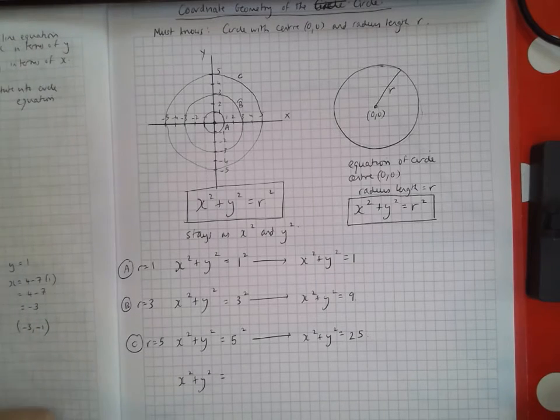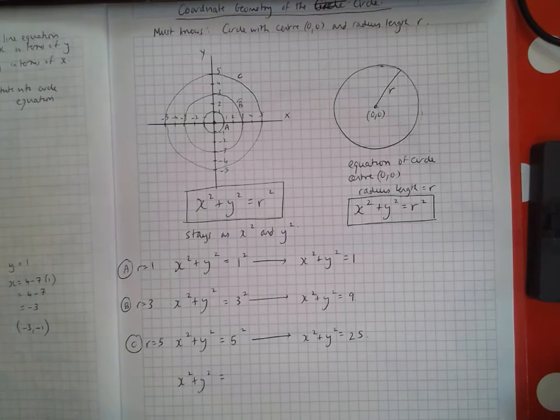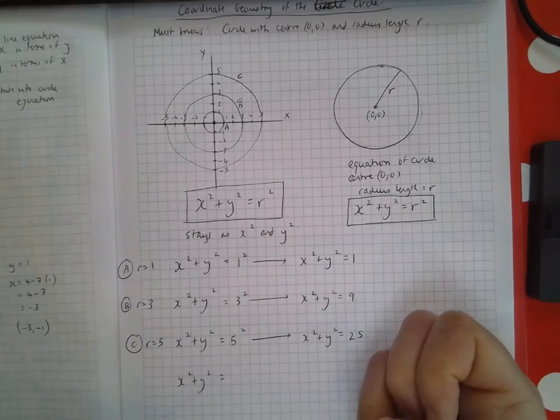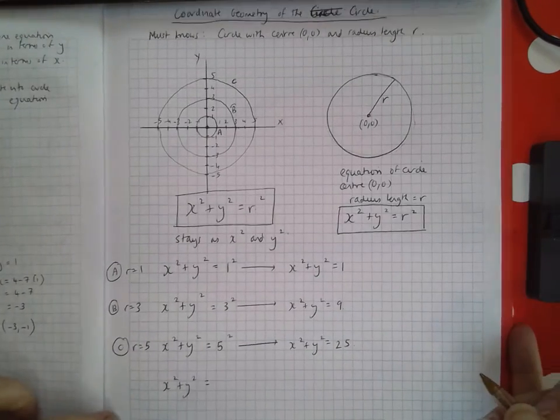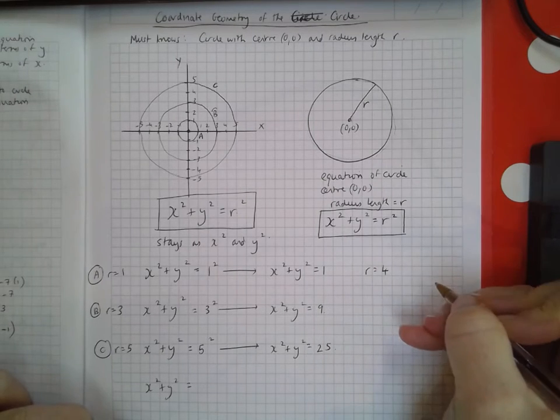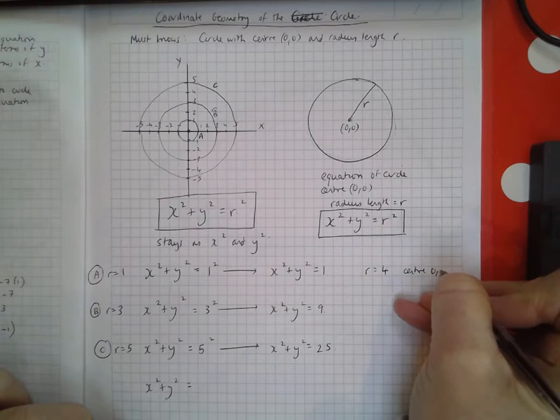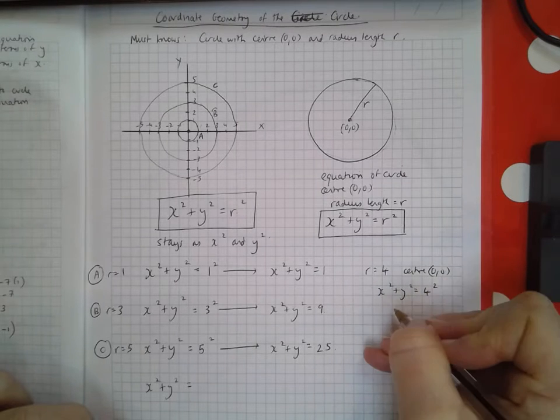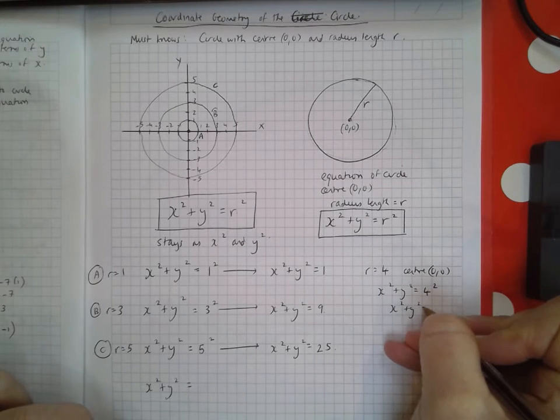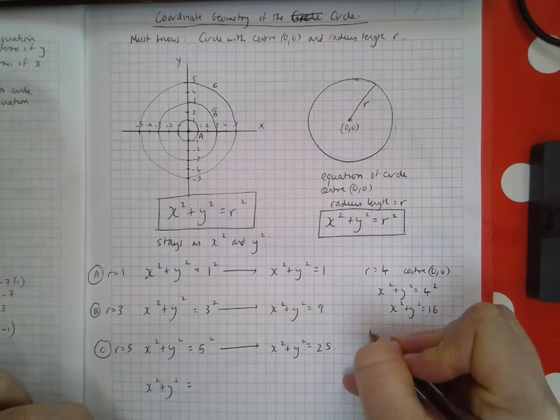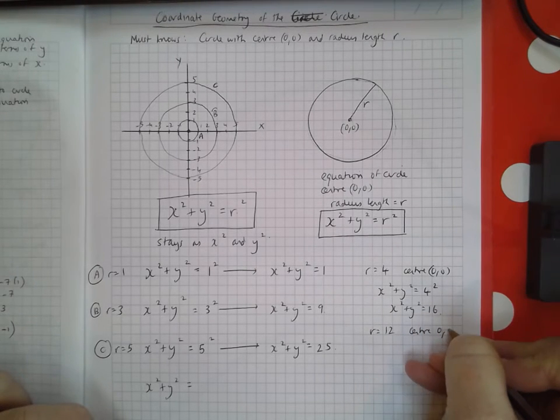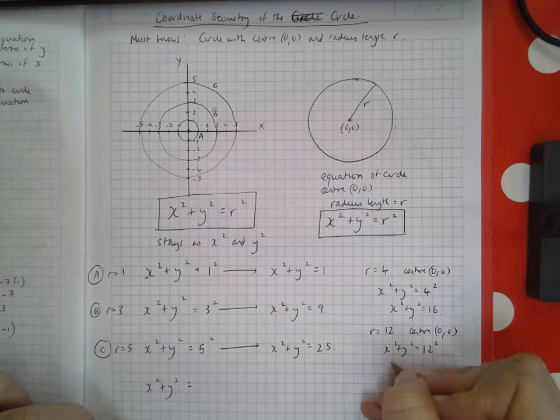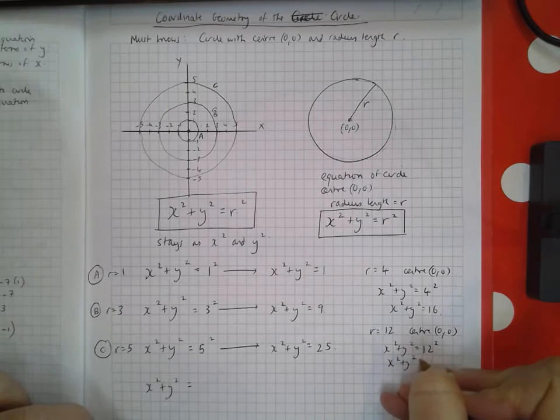It's that easy. If you know the radius and the center is (0,0), it's x² + y² equals the radius number squared. If the radius is 4 and center (0,0), it's x² + y² = 4² = 16. If the radius is 12 and center (0,0), it's x² + y² = 12² = 144.